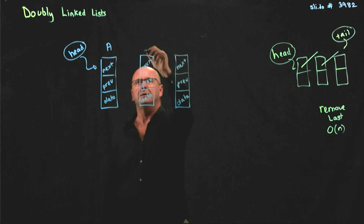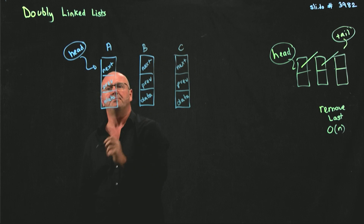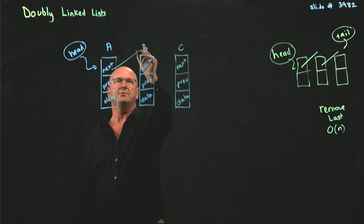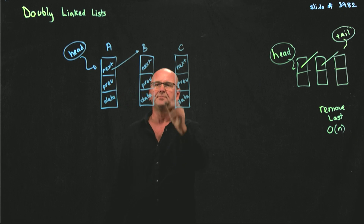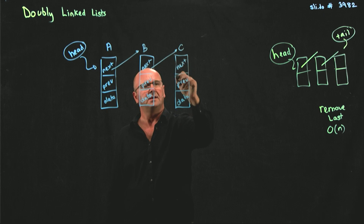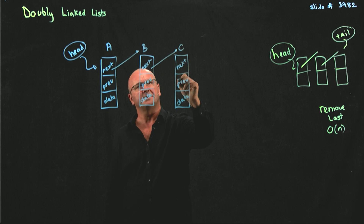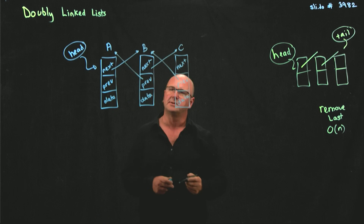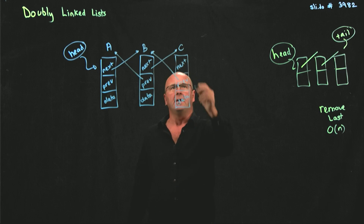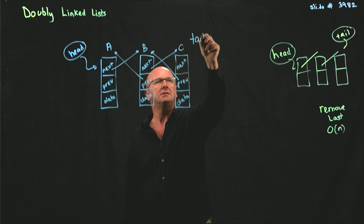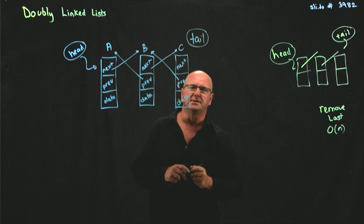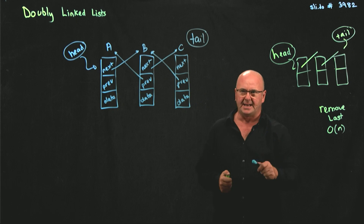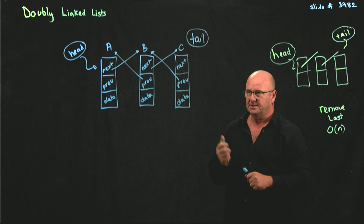I'm just going to draw three nodes. In each case, next points to the next thing in the list and previous points to the previous element. We can have a tail pointer, and a tail pointer is required for constant time adding and removing from the list.